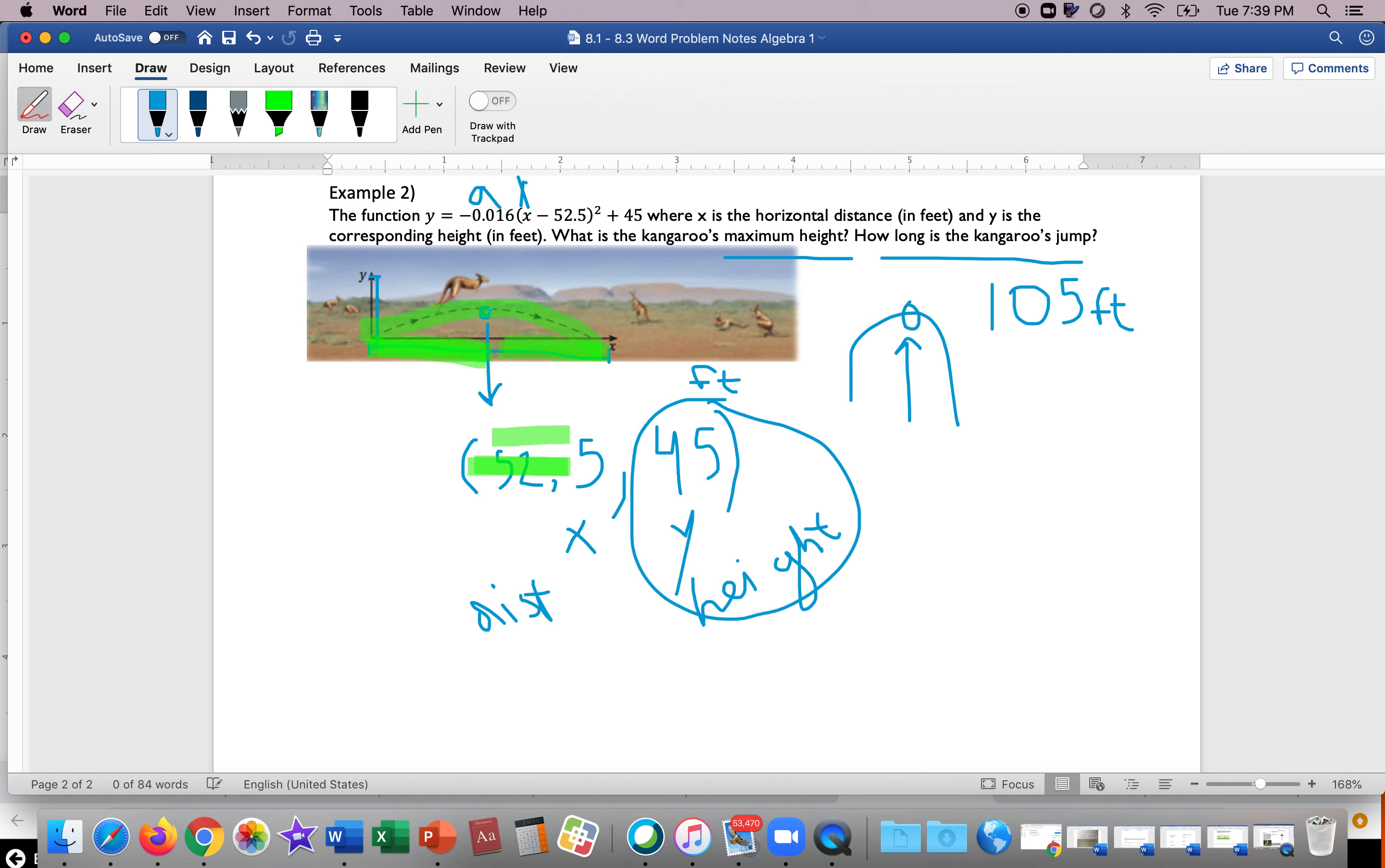So again, the kangaroo's maximum height, y-coordinate, because our vertex—the y-coordinate represents our max value—so 45 feet. How long is the kangaroo's jump? We look at the x because that's horizontal, that's its jump. We have to double 52.5, the x-coordinate of the vertex, because that's only halfway. We get 105 feet.